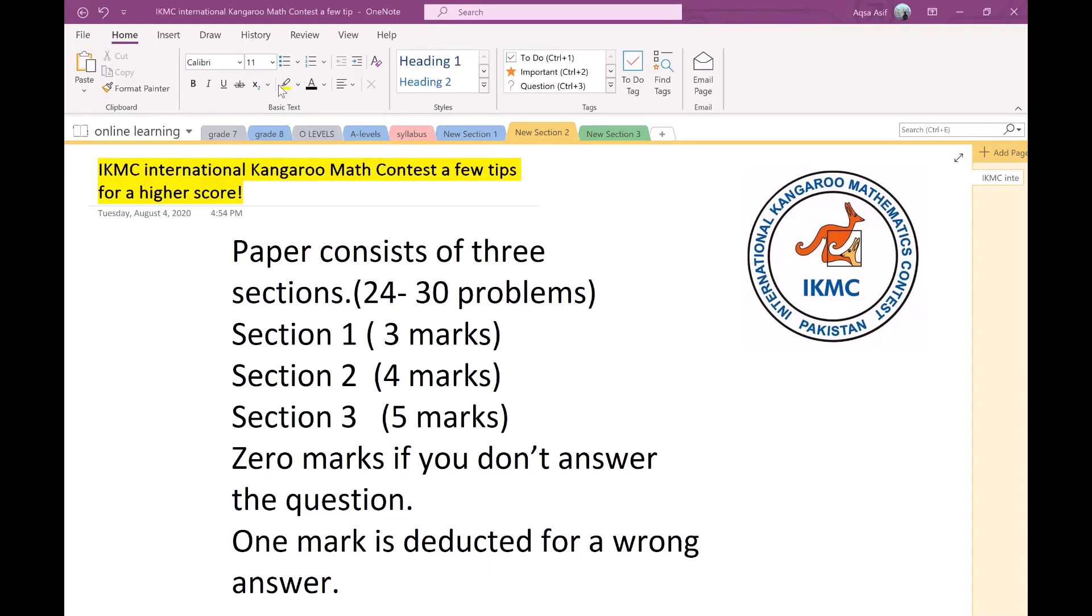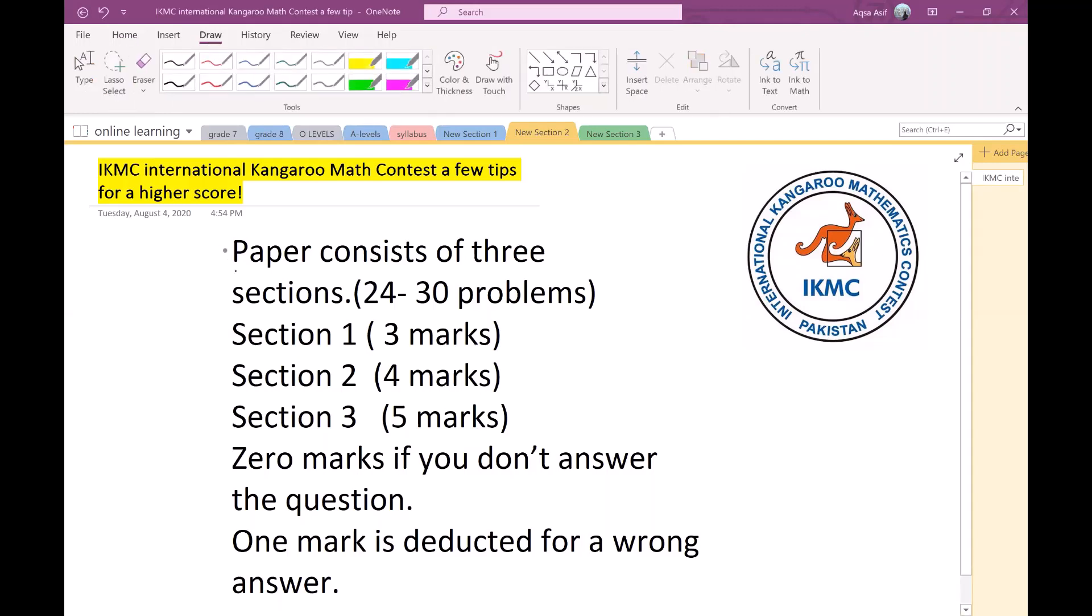I want you all to prepare well. Secondly, have a look at the paper composition. This is very important. Your paper consists of three sections. This time you will be writing online. The paper consists of three sections: Section 1, Section 2, and Section 3. There is a total of 24 or 30 problems. Section 1 might contain 8 to 10 questions, Section 2 contains 8 to 10 questions, and Section 3 will contain 8 to 10 maximum questions.